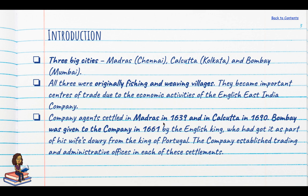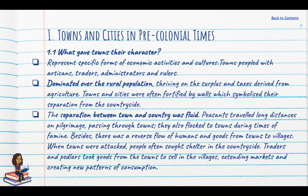Madras came to be settled in 1639, Calcutta in 1690, and Bombay was given to the East India Company in 1661 by the English king, who had received Bombay as part of his wife's dowry from the king of Portugal. The company established its trading and administrative offices in each of these settlements.